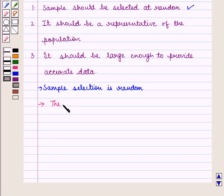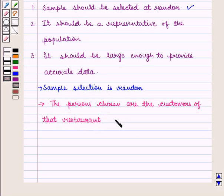Next, we know the persons chosen are the customers of that restaurant. So, they represent the population. Thus, second condition is also satisfied.